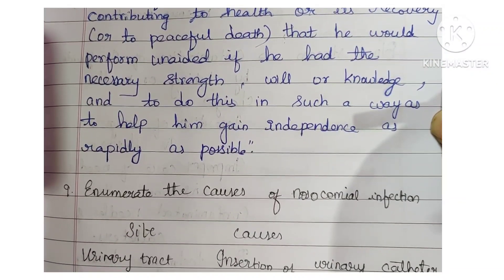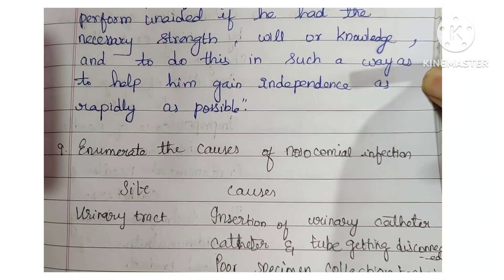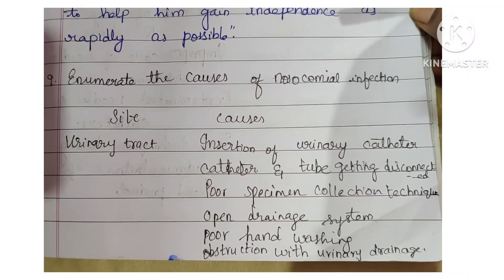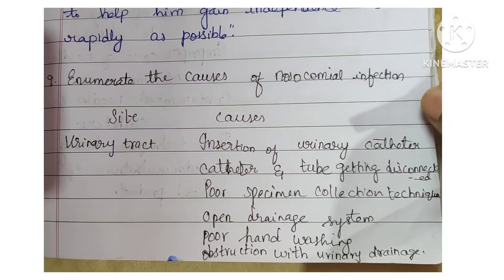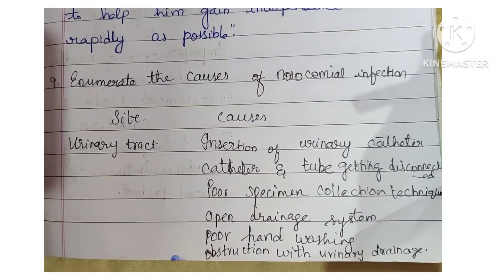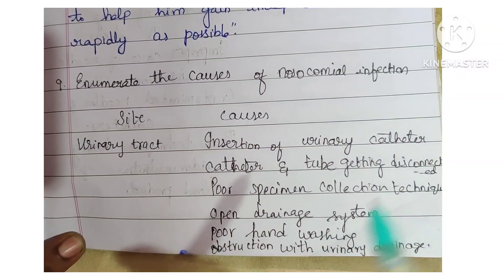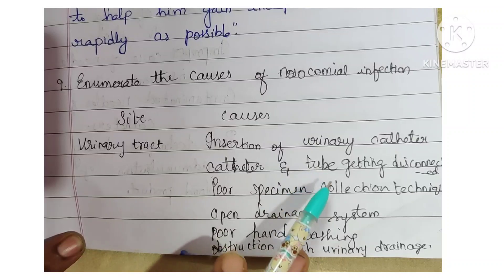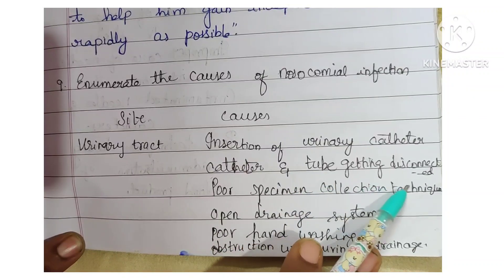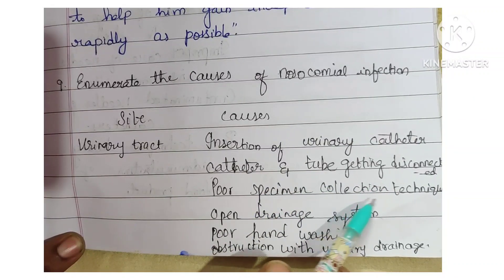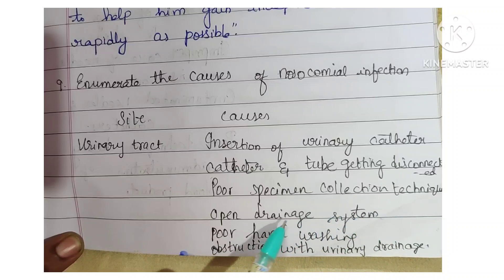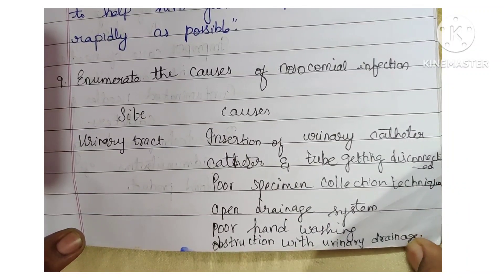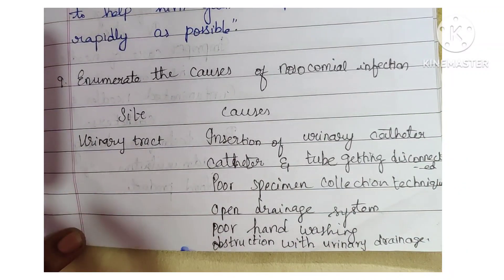Next question: enumerate the causes of nosocomial infection. For urinary tract: insertion of urinary catheter, catheter and tube getting disconnected, poor specimen collection technique, open drainage system, poor hand washing, and obstruction with urinary drainage.